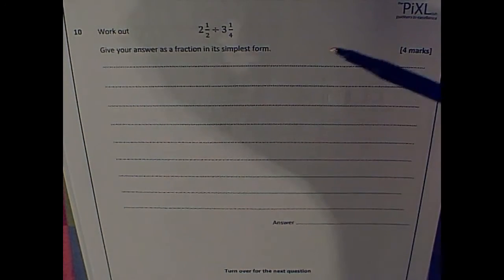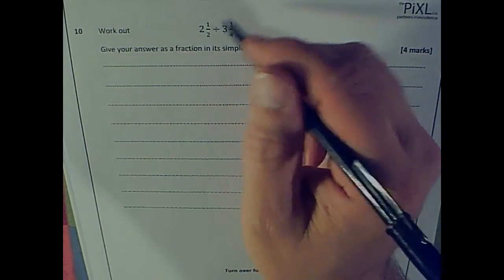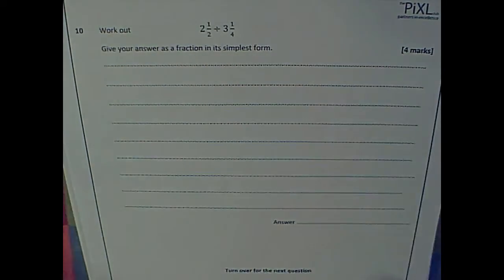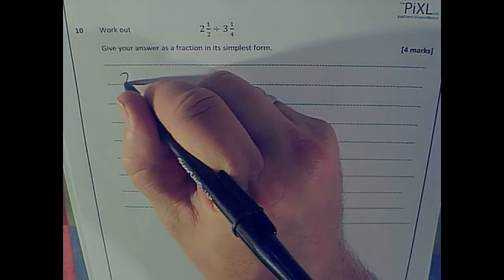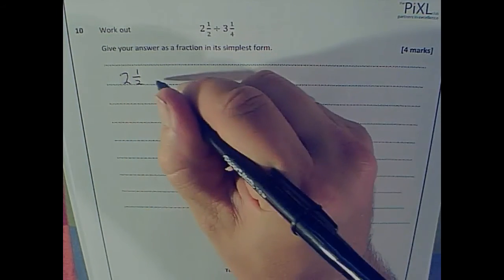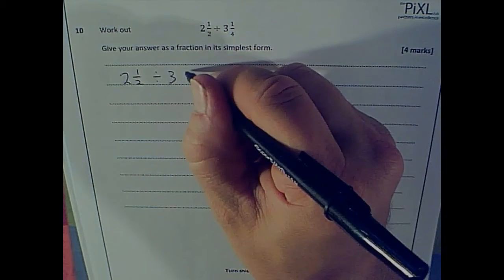Two and a half divided by three and a quarter. So what I would do with this is I would turn them into improper fractions. So two and a half divided by three and a quarter. I'm just going to rewrite that out. Two and a half divided by three and a quarter.